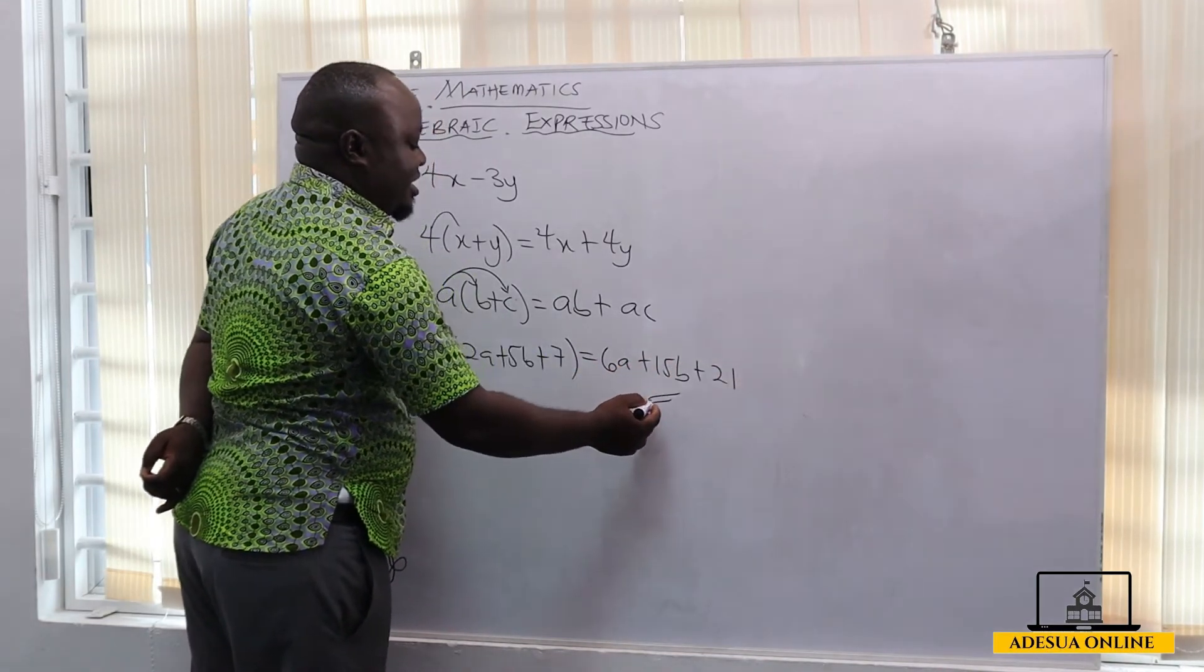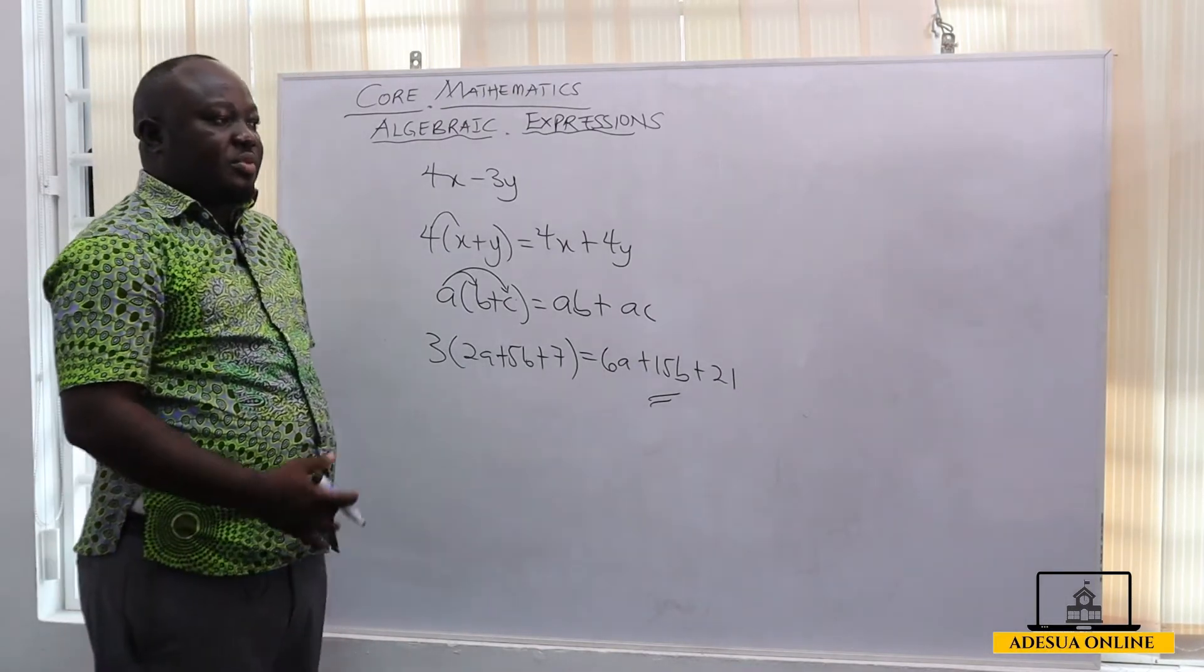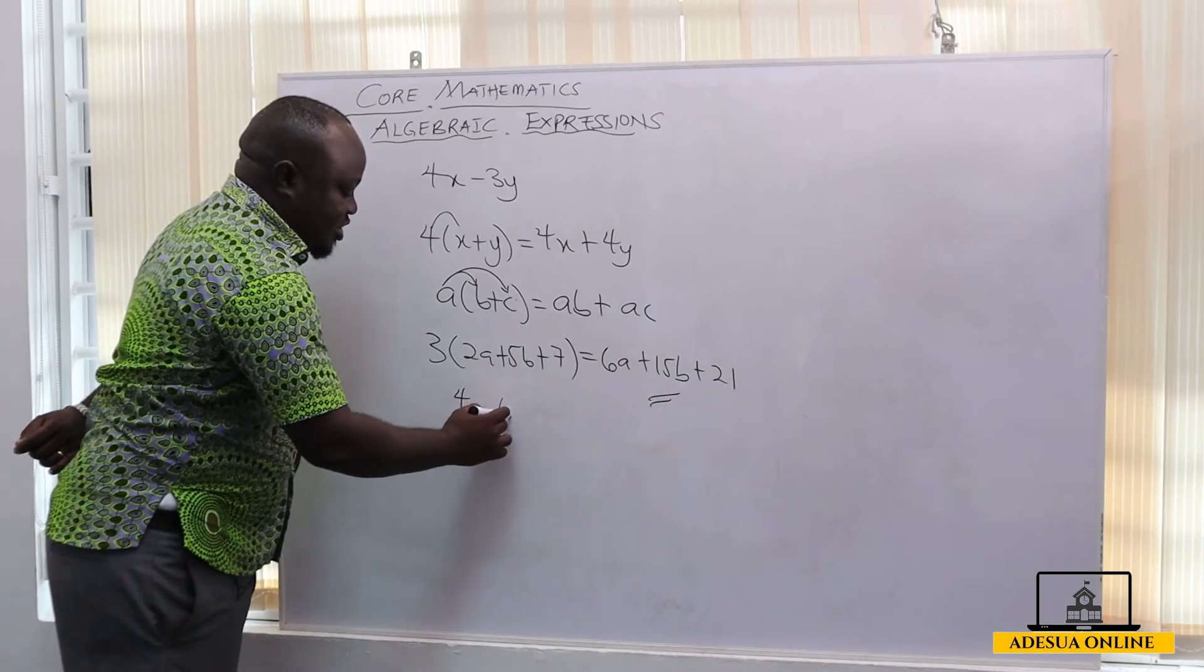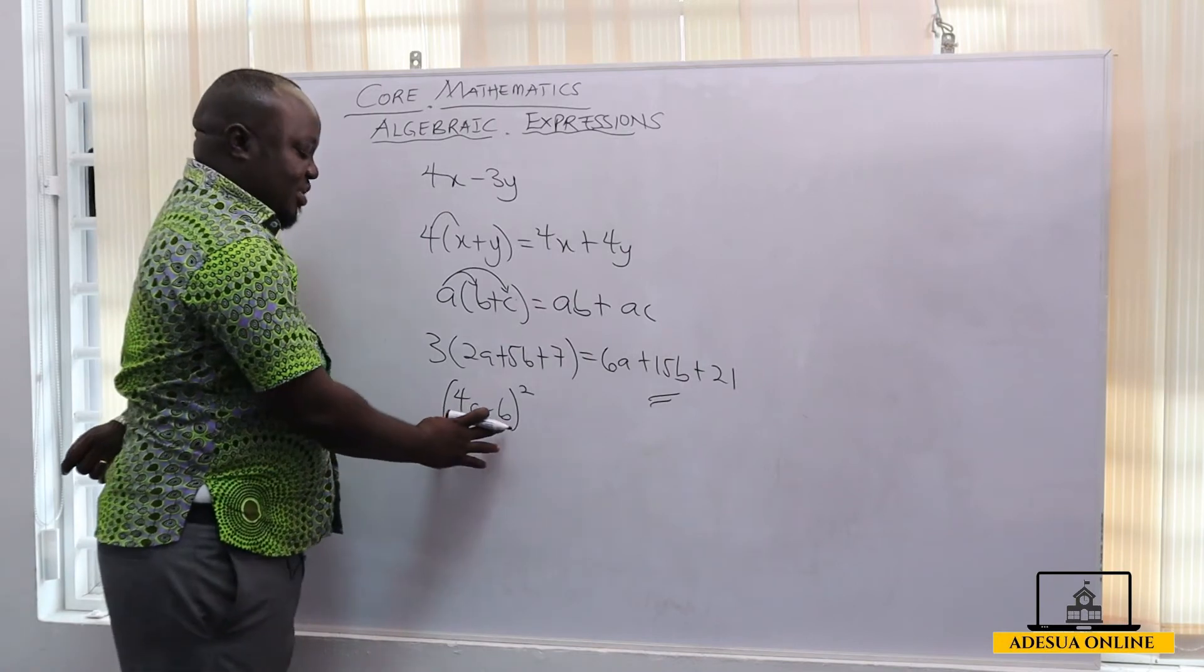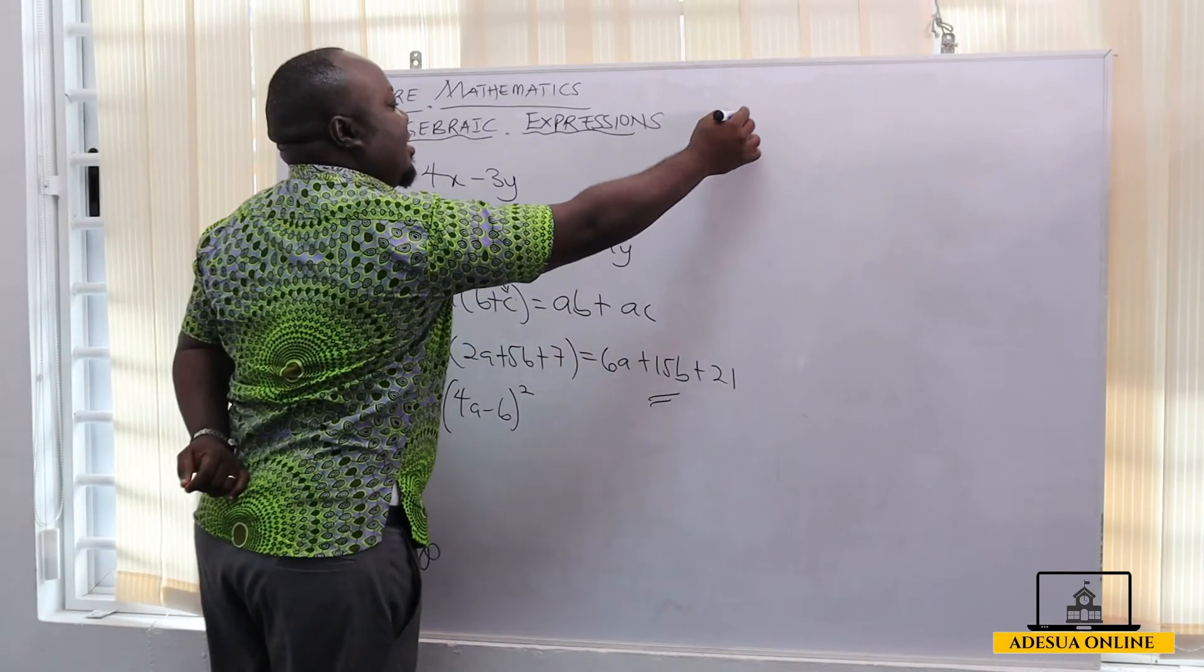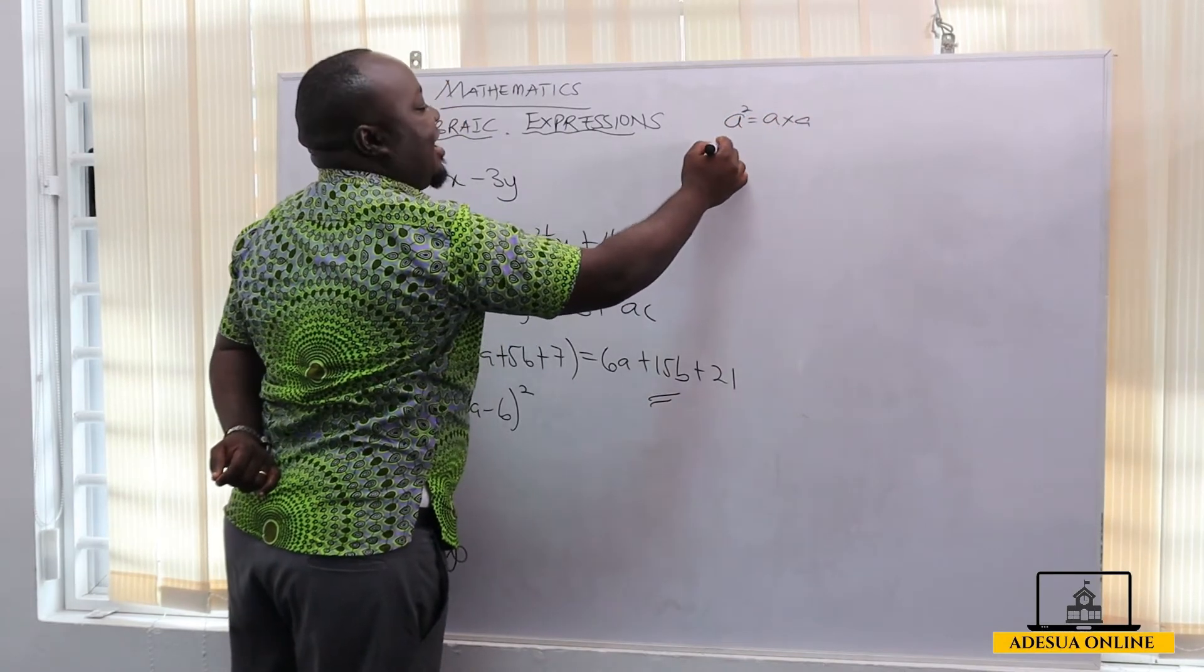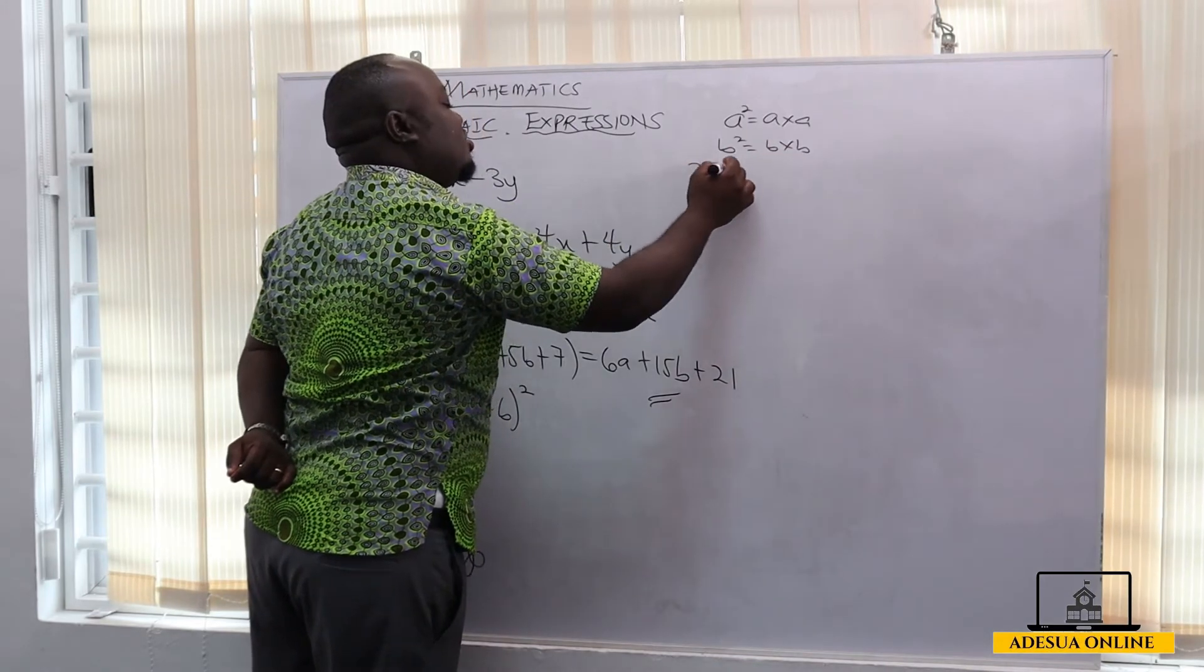Normally when we have, let's say, 4a minus b all squared, this means twice of 4a minus b. Because when I say a squared, a squared means a times a. So if I have b squared, it also means b times b.